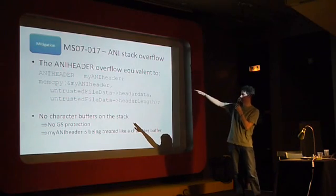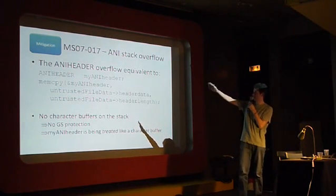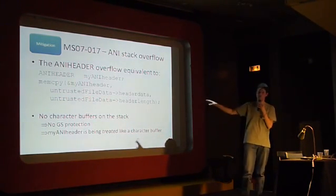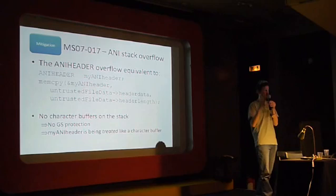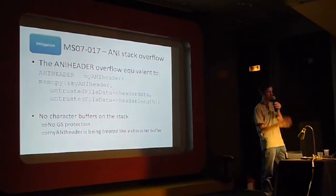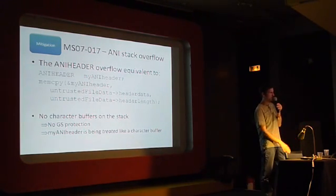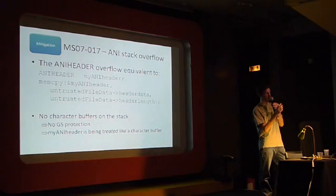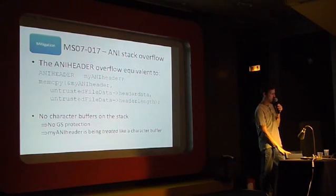So that structure was a fixed size — say 20 bytes — and if the file said it had an ANI header structure of 2,000 bytes, then that memcpy would try and copy 2,000 bytes into that 20-byte struct.